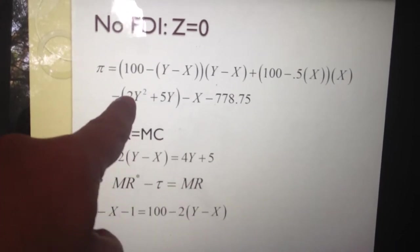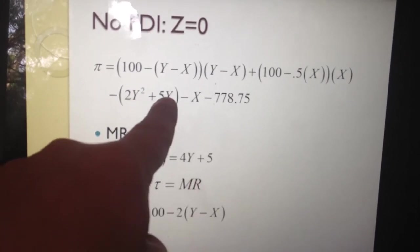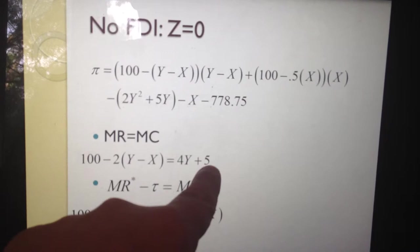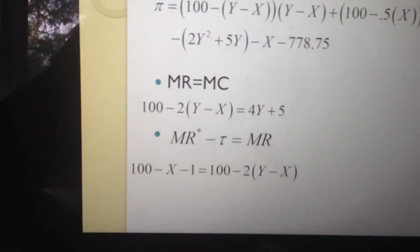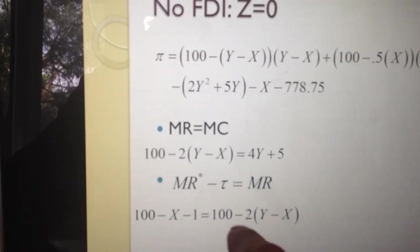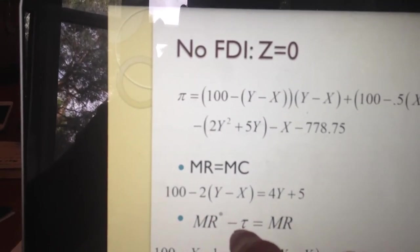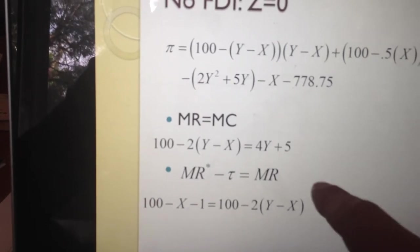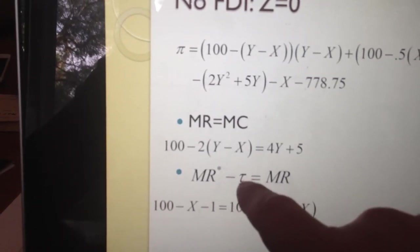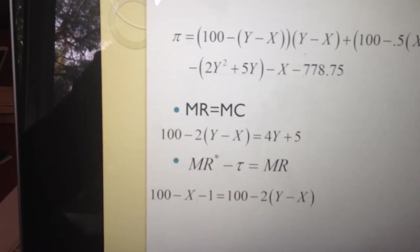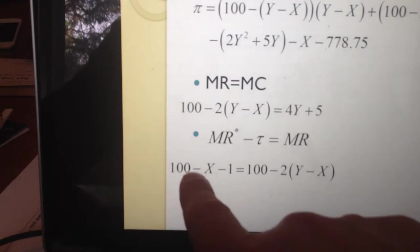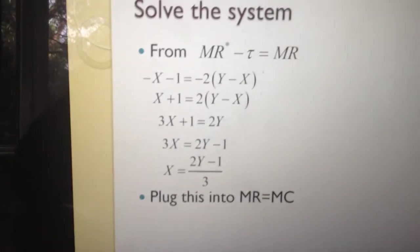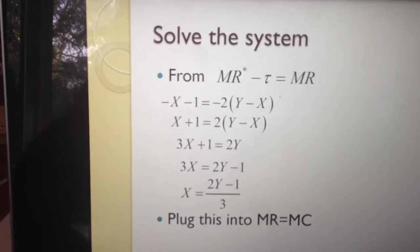Marginal cost comes from taking the derivative: the two drops down giving 4y, and the derivative of 5y gives just 5. If you need help with derivatives, look elsewhere on YouTube. Over in the UK, marginal revenue minus the additional transport cost equals marginal revenue at home — the economics being you could sell at home and earn this much, or pay to ship it and earn that much after transport. So marginal revenue overseas is 100 minus x minus the transport cost of 1, equals marginal cost in Ireland.